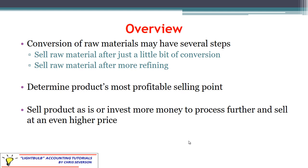We start with raw materials and then we generally apply some sort of conversion cost to them. This could be labor, could be overhead, could be a little bit of both. For this decision we have a couple of options. We could sell this product after just a little bit of conversion, or we could refine it further and sell it at a higher price. That's really what it boils down to — which decision is most profitable.